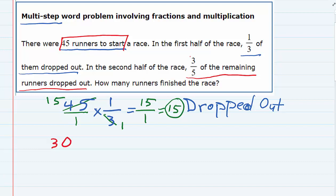And of those 30 remaining runners, three-fifths drop out. So I need to find out how many dropped out this time around. Three-fifths of those remaining runners. So I can multiply those, and again this is going to tell me how many dropped out. Multiplying, I would turn that 30 into 30 over 1.